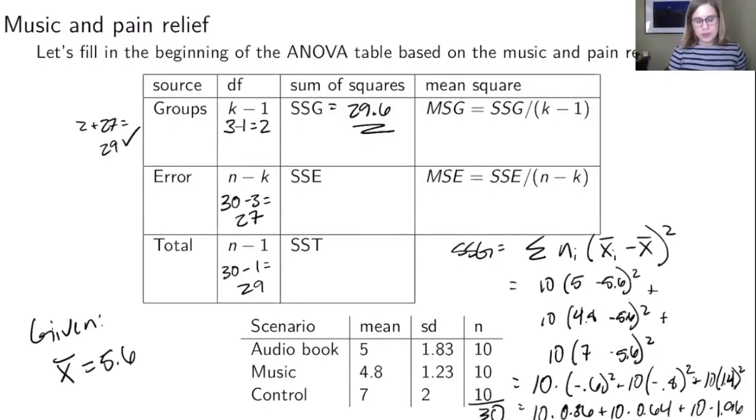So now we could use a shortcut formula either for SSE or SST. The shortest one is for the SST, that's the n minus 1 times the overall standard deviation squared. But I actually haven't given you the overall standard deviation. So we could use the shortcut formula for the SSE to do that one. So I'm going to just make myself some room here.